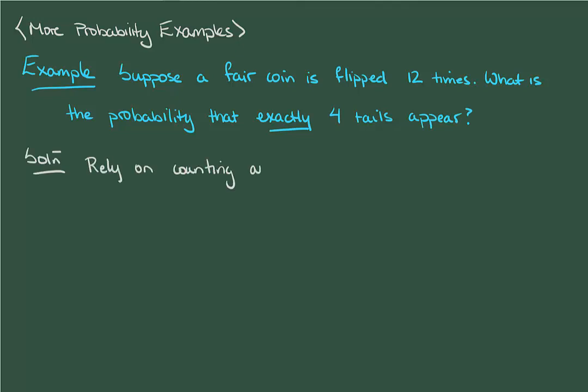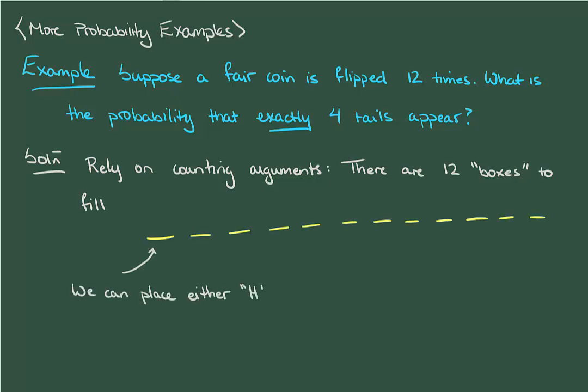Here we'll finally see why counting arguments are so incredibly useful. Let's first determine how many outcomes are in our sample space. Since we're flipping a coin 12 times, we can think of this as 12 boxes that need to be filled. In each box we can either put an H for heads or a T for tails. With two options for each box and 12 boxes total, the basic counting principle says there are 2 to the 12 possible outcomes.